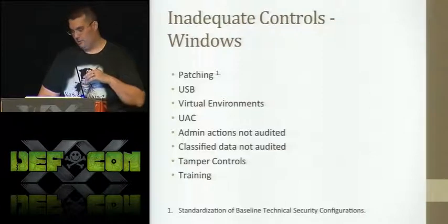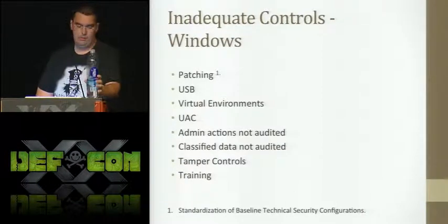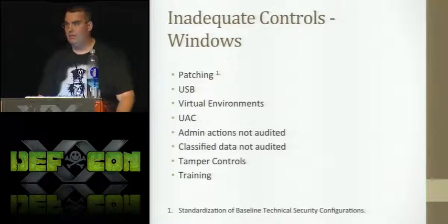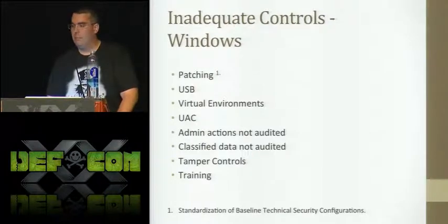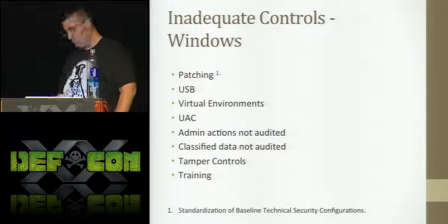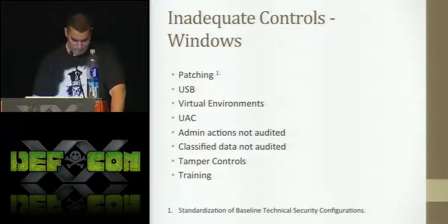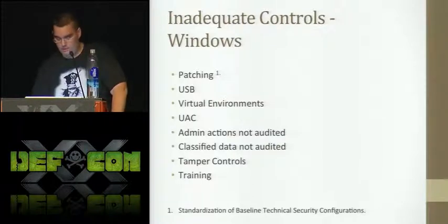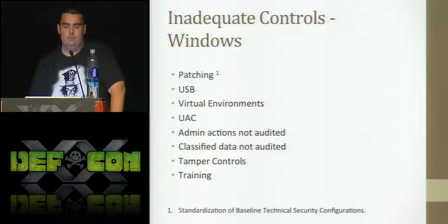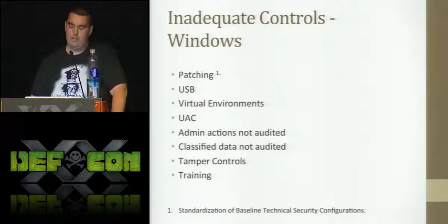An overview of inadequate controls in Windows: patching is very ambiguous. If the system's not patched, I can't tell them to patch it — I just have to tell them they should expeditiously patch the system. USB — that's how stuff gets taken off the system. Virtual environments: if you're running VMware or any other virtual system, there are no security requirements for it — do whatever you want. UAC with Windows 7 and Vista — not addressed at all. Classified data is not audited. I don't care if you click on a folder — I just care if you're taking classified data off the system.